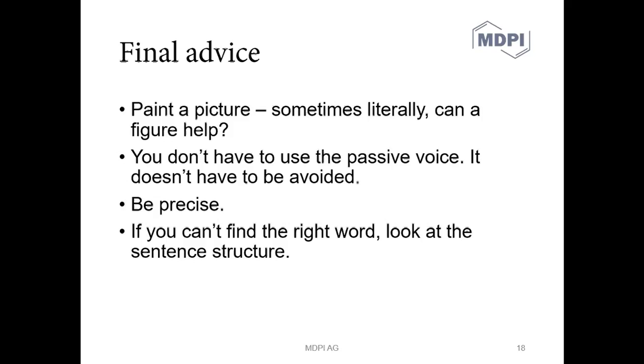So a few bits of final advice. What I mentioned several times is that you should look to paint a picture. And sometimes you should do this literally. Maybe a figure or a table with information can help rather than a whole paragraph or several paragraphs of prose. You may have received advice about using the passive voice, which is when for example in the second sentence here it doesn't have to be avoided. It doesn't really say who's doing the avoiding in this sentence. Well you don't have to use it, you don't have to not use it. But just think about the clarity of your writing and decide what's most appropriate for the situation that you're writing in.